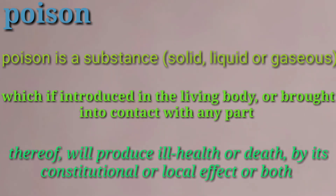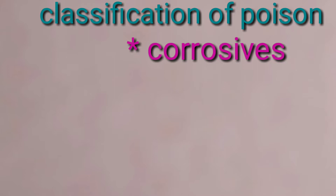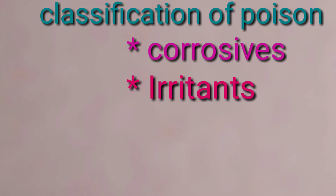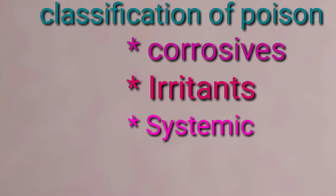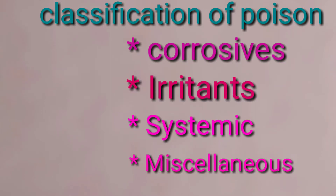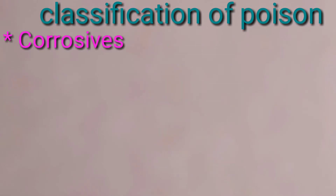Now we will see the classification of poison one by one: corrosive, irritant, systemic, and miscellaneous.